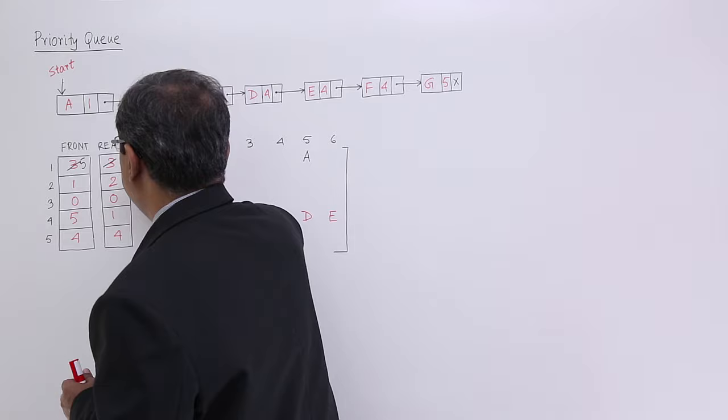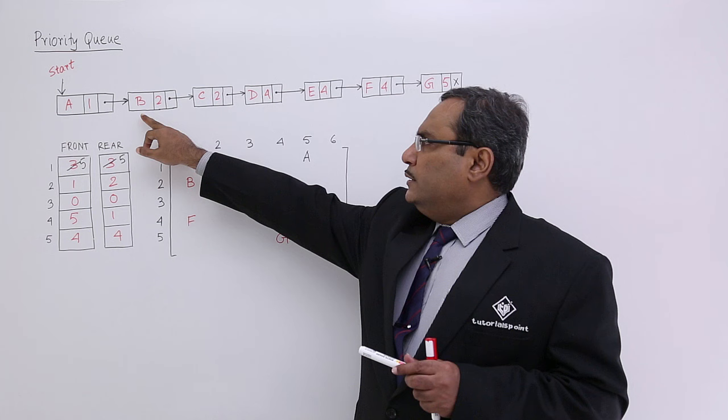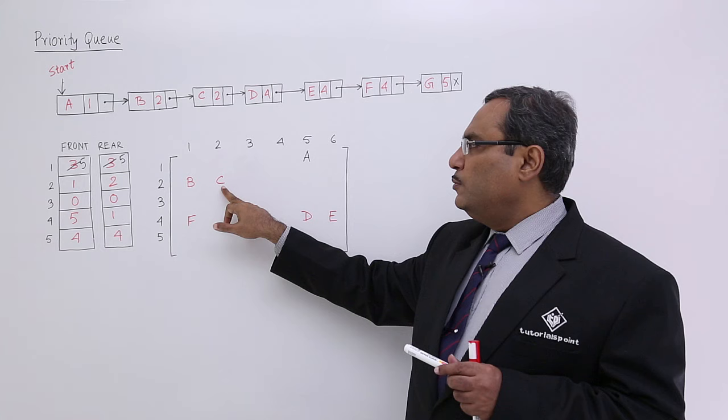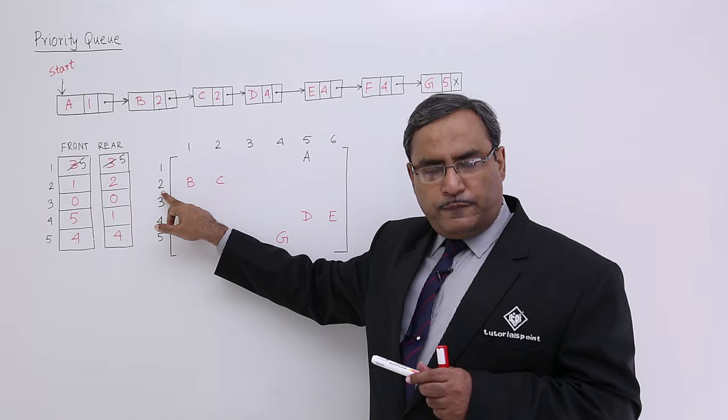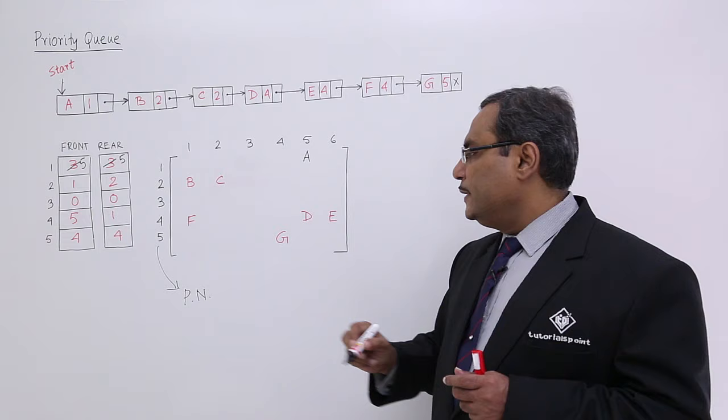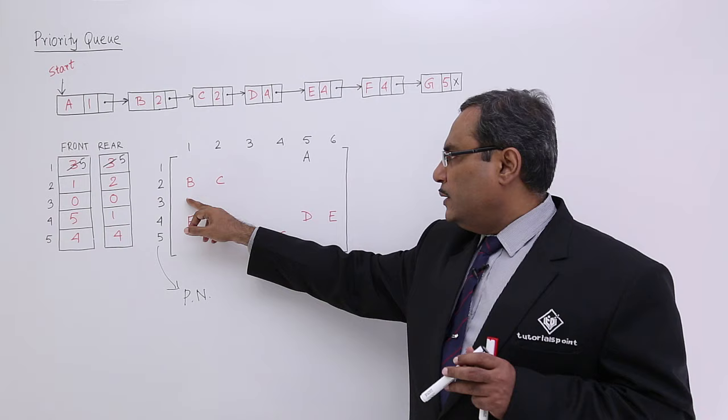I have written them very arbitrarily. With priority 2, I am having two nodes B and C. I am putting them at location number 1 and 2, so front will be 1 and rear will be 2. They have been kept at the second row because the priority number is 2 — these rows are denoting the priority numbers. With priority number 3, there is no node, so front is equal to 0 and rear is equal to 0.